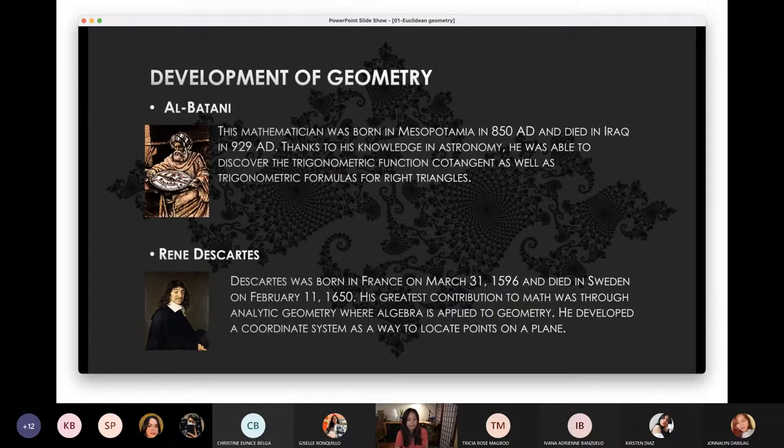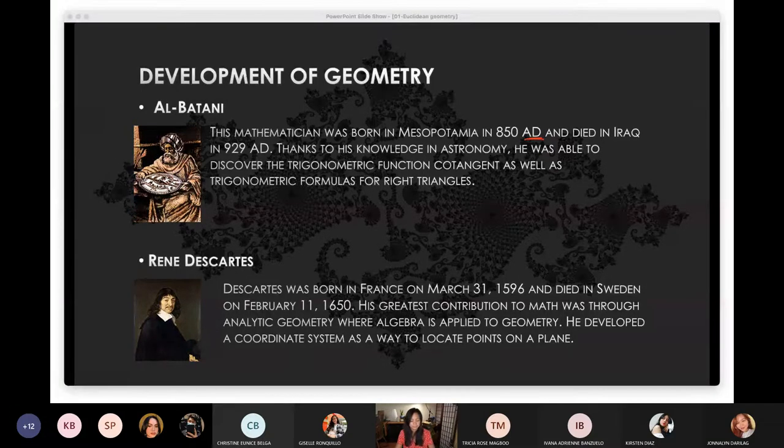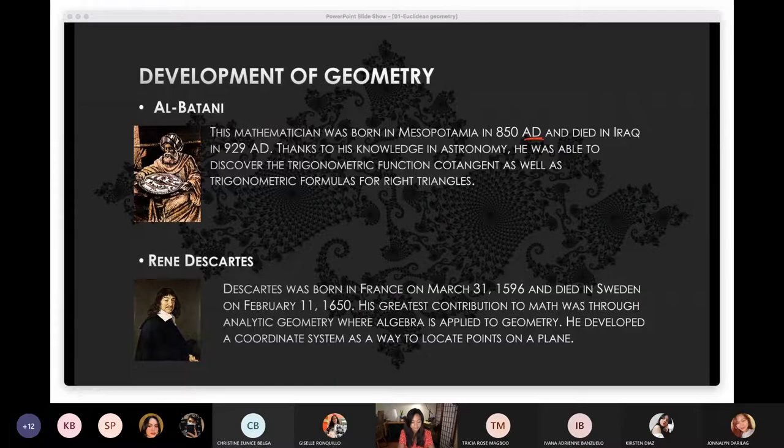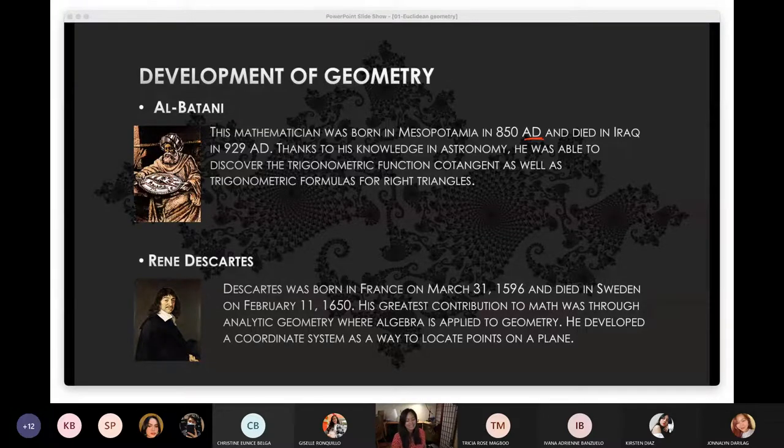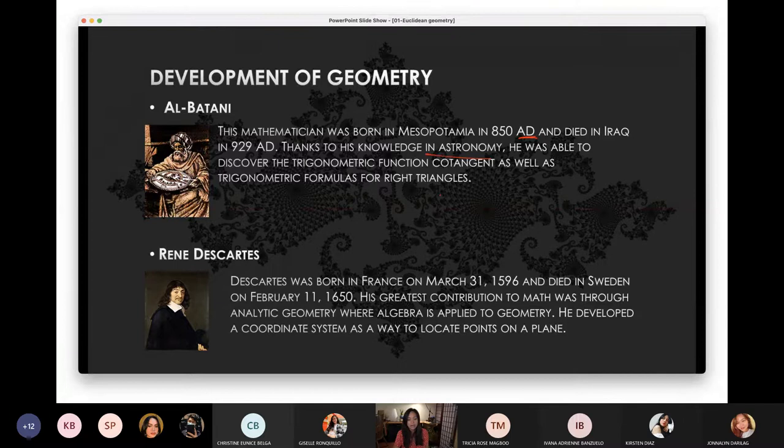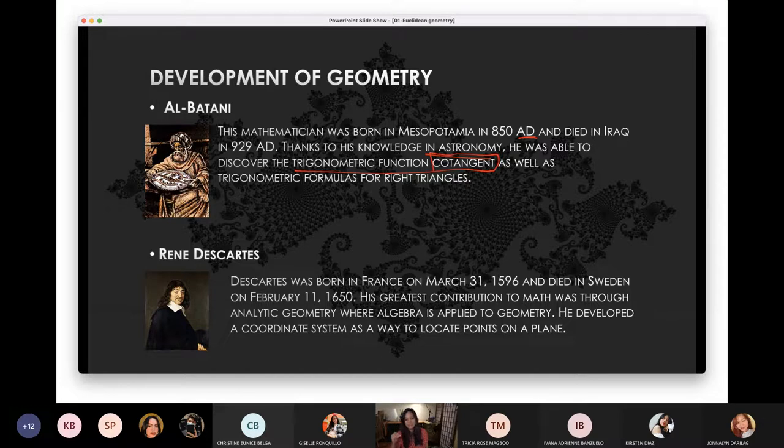The next one is Al-Battani. Al-Battani is AD. AD means Anno Domini, in the year of the Lord, in the year of Christ. So AD, during that time, thanks to his knowledge in astronomy, he was able to discover the trigonometric functions of cotangent. If you're familiar tangent, cotangent. It's the inverse version of that. Trigonometric formulas for right triangles.